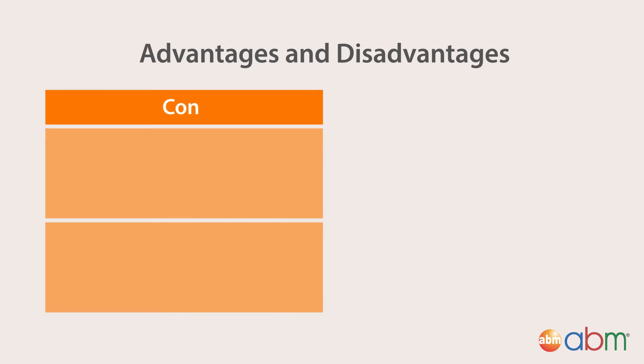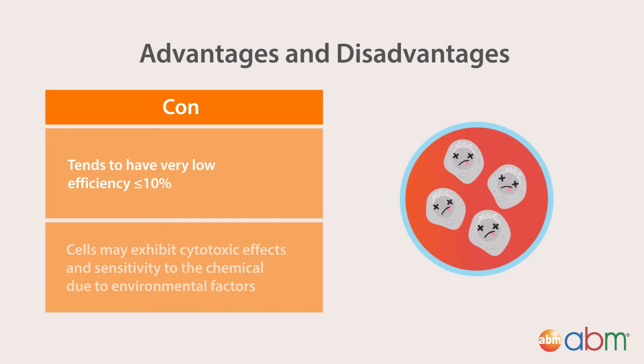Con: however, this method tends to have very low efficiency of less than 10%. Very low probability that the DNA-calcium phosphate complex can bypass the nucleus of the cell, hence is usually transient expression. As a result, due to cellular stress, cells may exhibit cytotoxic effects and sensitivity to the chemical due to environmental factors such as pH and temperature changes.